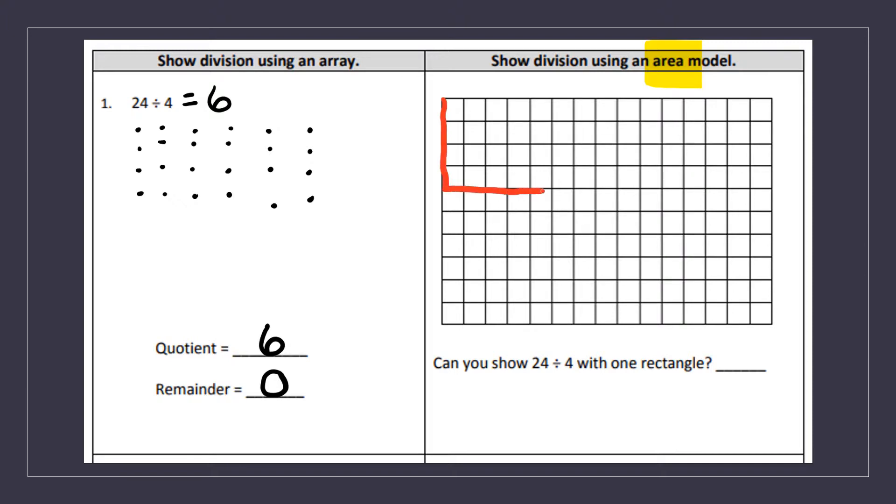One, two, three, four, five, six. One, two, three, four, five, six, seven, eight, nine, 10, 11, 12, 13, 14, 15, 16, 17, 18, 19, 20, 21, 22, 23, 24.